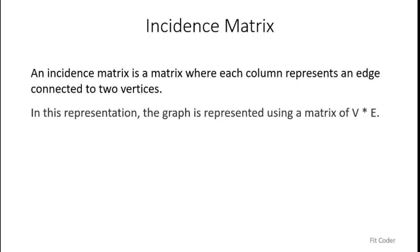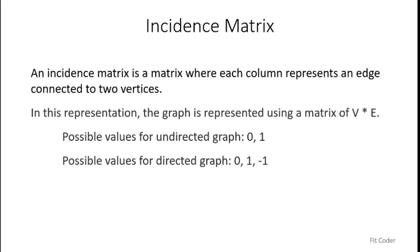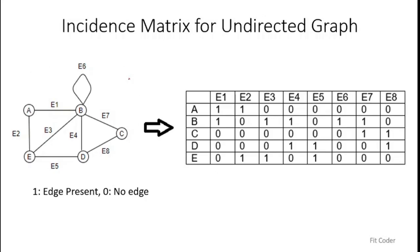Each column represents an edge which is connected between two vertices. The possible values for an undirected graph are 0 and 1, and for a directed graph the values are 0, 1, and -1. Now let's see how we can create an incidence matrix of an undirected graph using the same example I've used before.